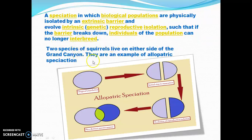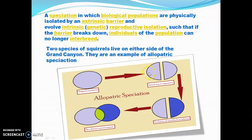Two species of squirrels living on either side of the Grand Canyon are an example of allopatric speciation. This is the original population, then allopatric — two geographical areas — this is the initial step of separation, followed by the evolution of reproductive isolation, and new distinct species appear.